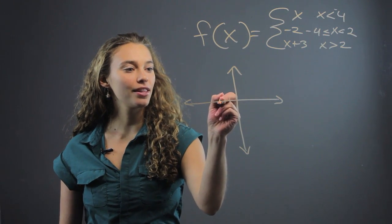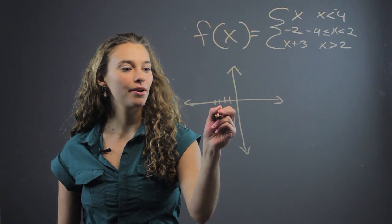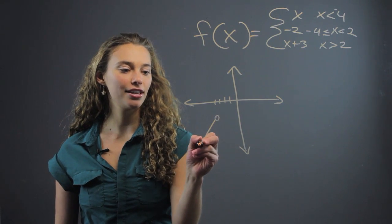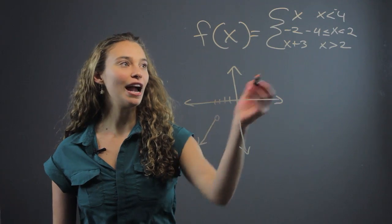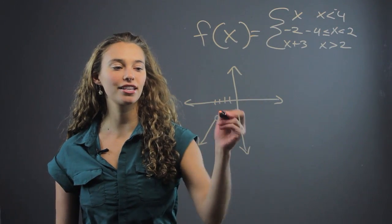So let's say four is here. We're going to do an open circle and do the graph. I know it has a slope of one, so it's going to look like that.